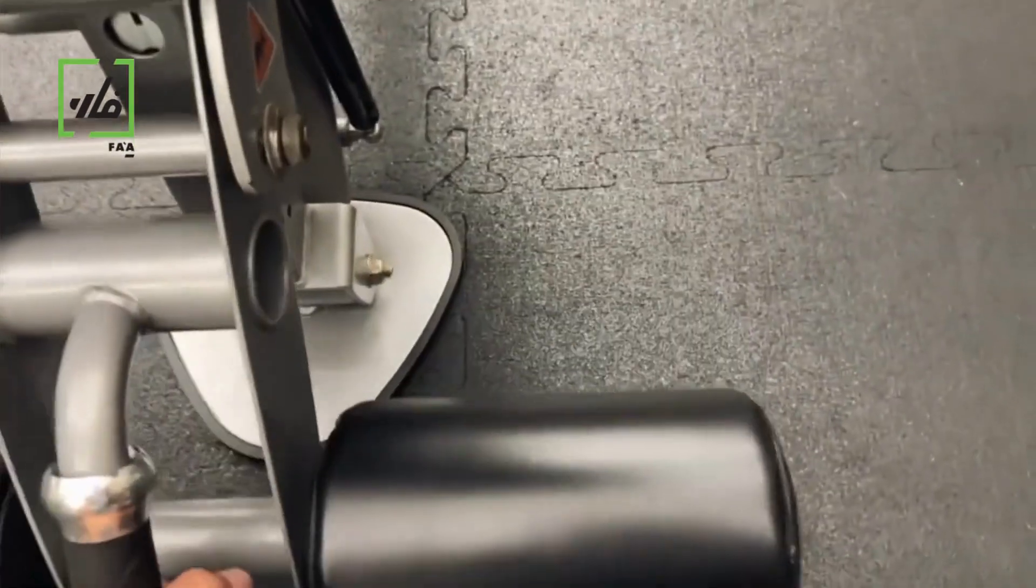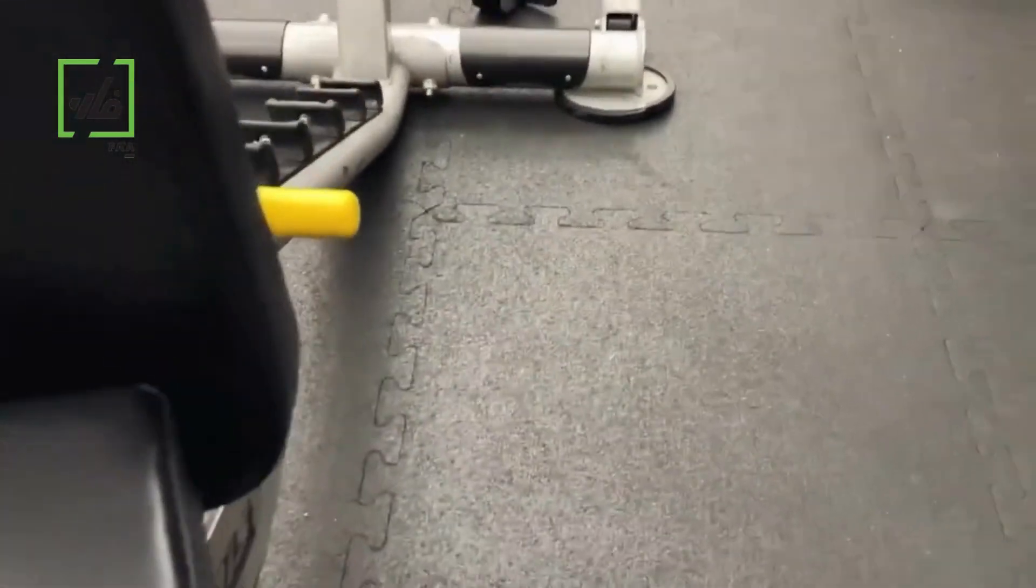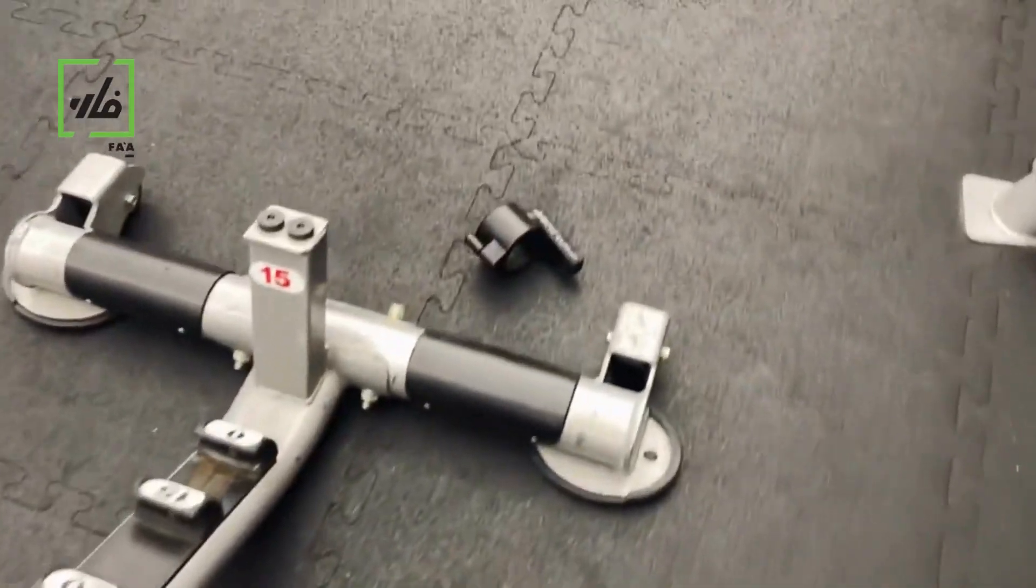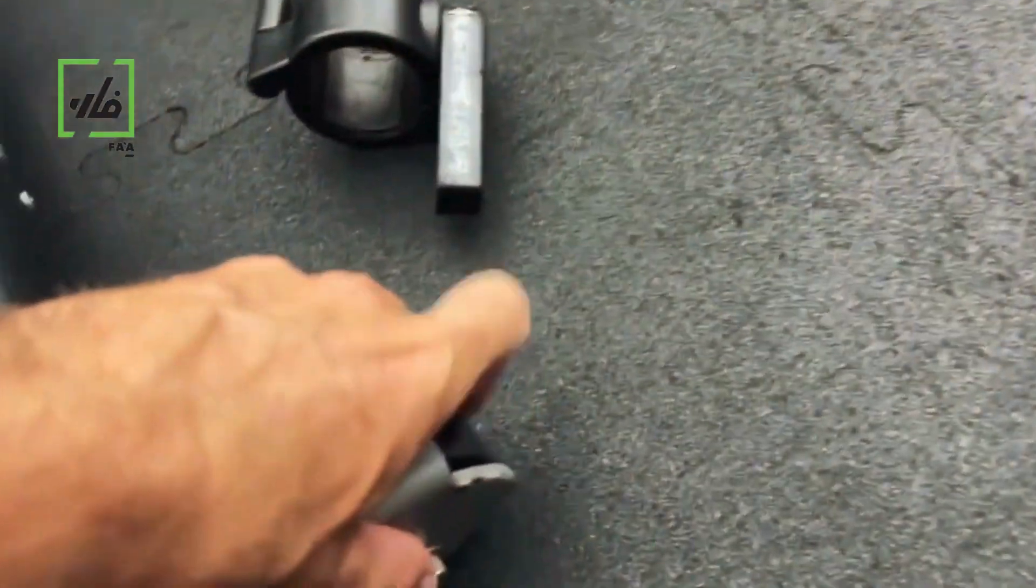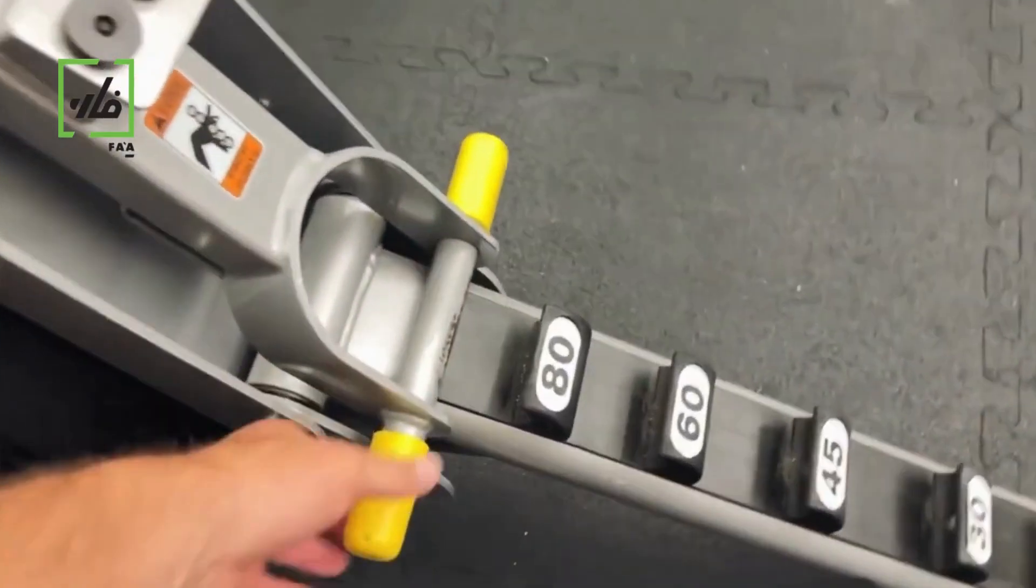This is nice and solid, super sturdy foam rubber padding. As you can see here, we can lift up the adjustable leg piece and lift it all the way up. We actually have wheels on the back there so we can wheel this thing around our gym wherever we need it. Nice heavy-duty wheels so we're not dragging and scraping the floor here.